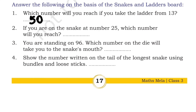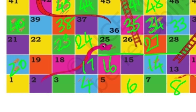The next question: if you are on the snake at number 25, which number will you reach? We already know that if we reach a ladder, we climb up the board; but if we land on a snake, the snake bites and we come down. Checking number 25 — if we reach 25, we come back to number 2.